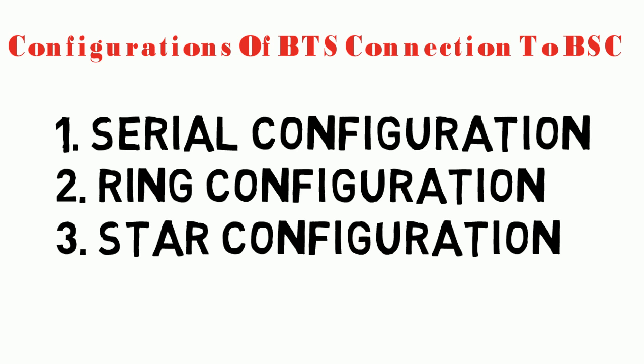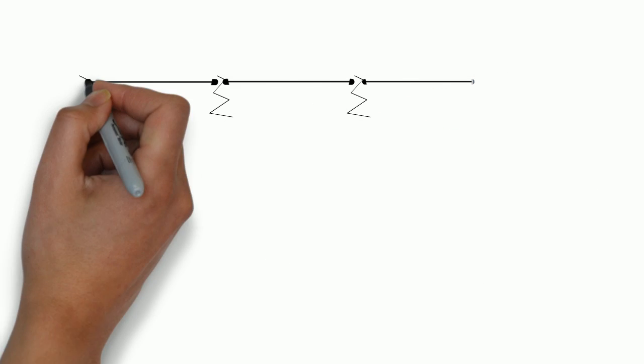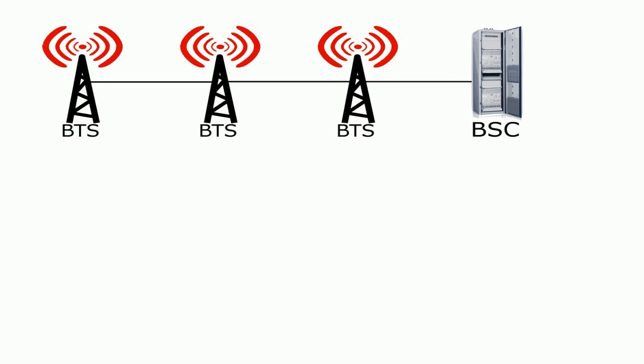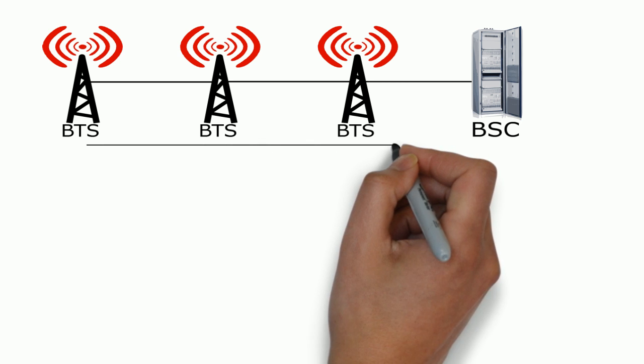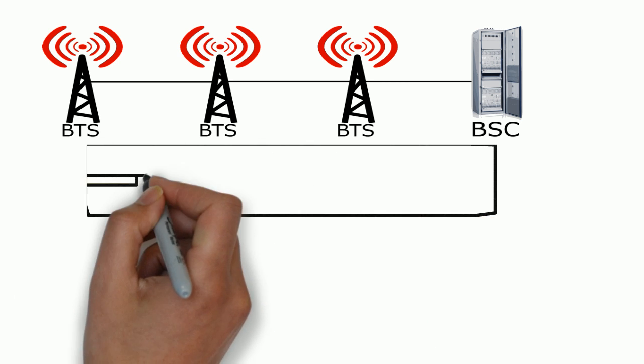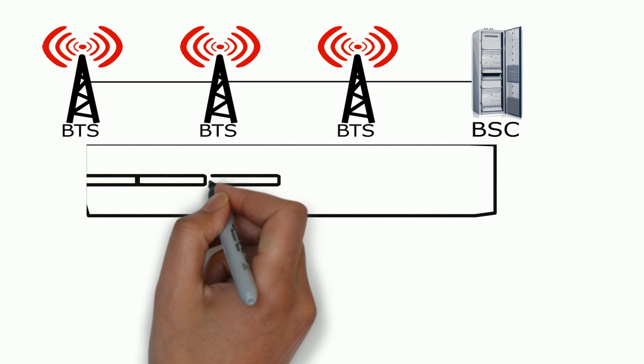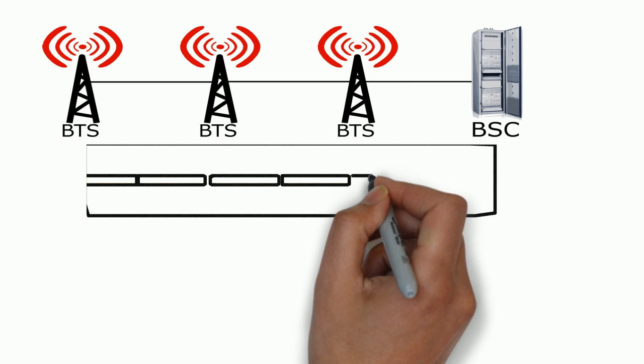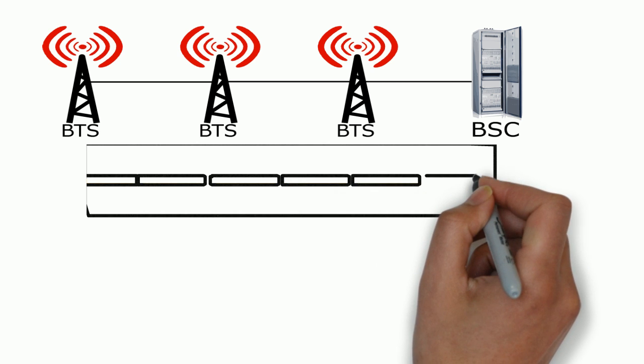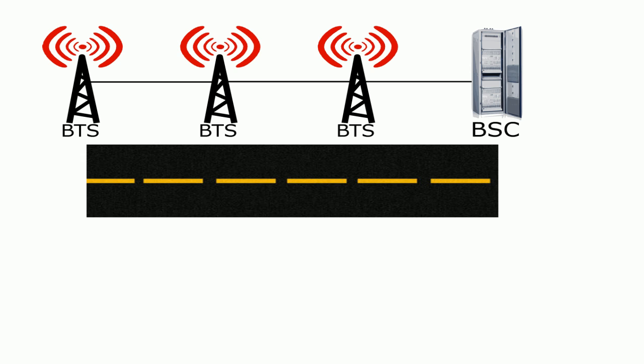First we are going to discuss the serial configuration. As is evident from the diagram, the BSC, BTS, and the other BTSs connected to the BSC are all connected in serial. This configuration is most frequently used on highways, for example when there is a large distance between two cities. In that case, the BTSs on the highway can be connected in serial to one another and then to the BSC.